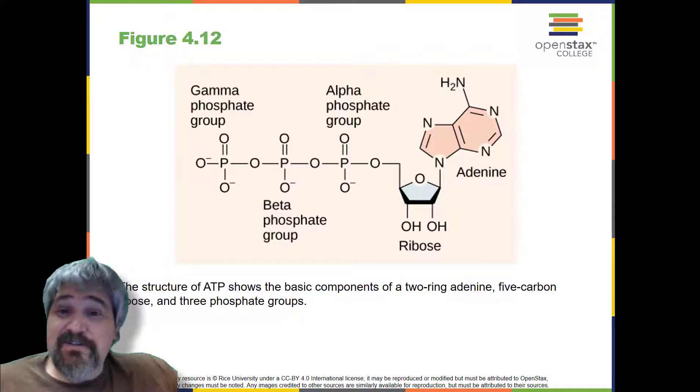At the heart of ATP is a molecule of adenosine monophosphate, which is composed of an adenine molecule bonded to both a ribose molecule and a single phosphate group. Ribose is a 5-carbon sugar found in RNA and AMP is one of the nucleotides in RNA. The addition of a second phosphate group to this core molecule results in adenosine diphosphate. The addition of a third phosphate group forms adenosine triphosphate, ATP.